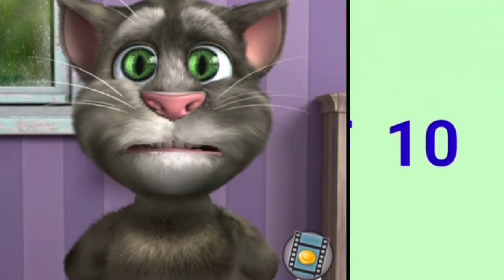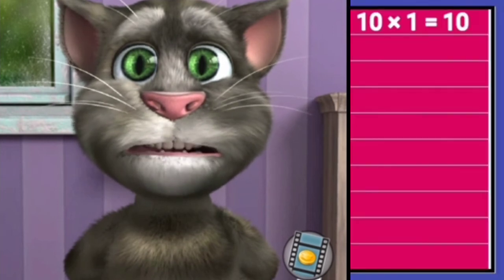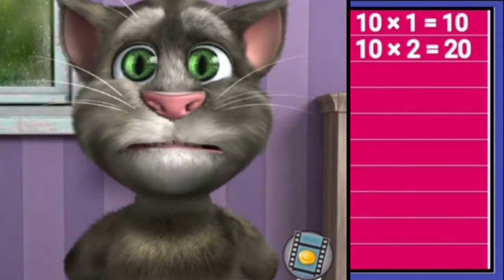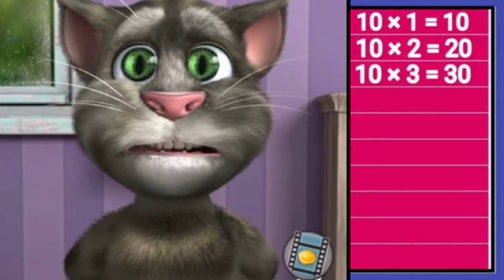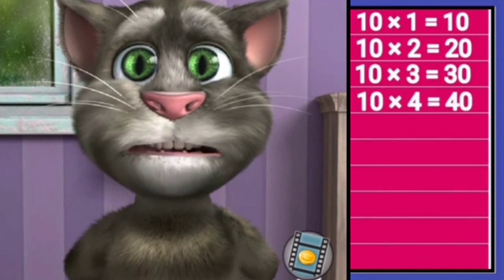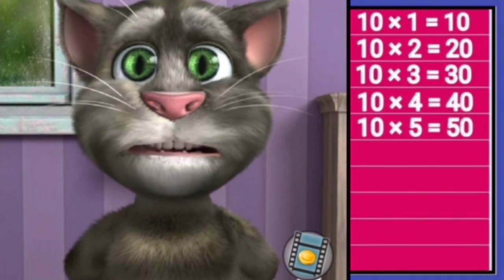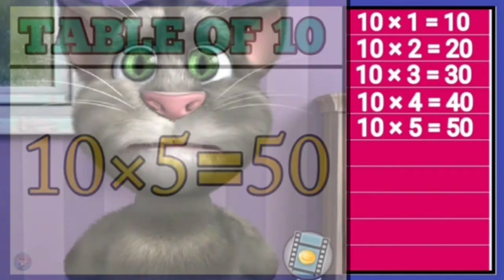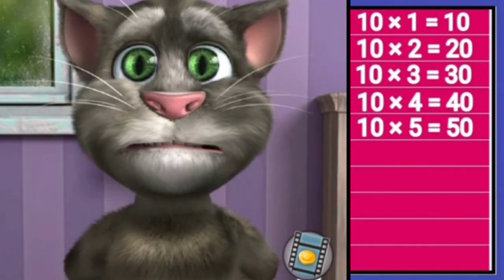Table of ten. Ten ones is ten, ten twos is twenty, ten threes is thirty, ten fours is forty, ten fives is fifty.